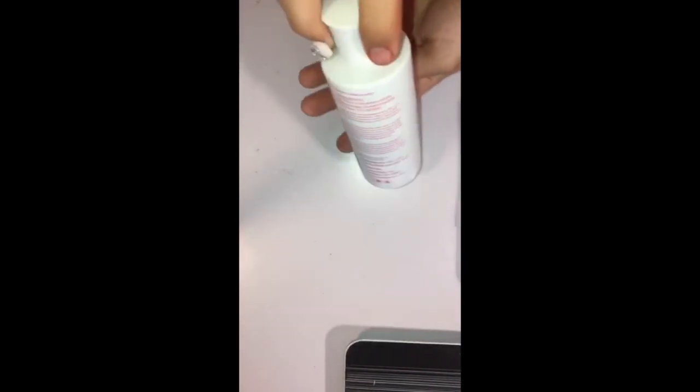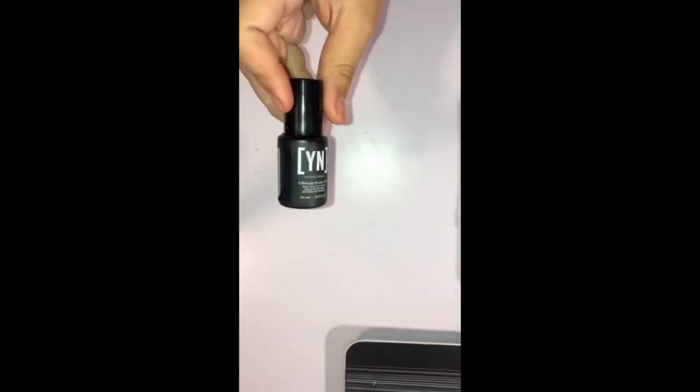For starters, we will be using nail monomer. We will also be using a nail top coat as well as a Kalinske brush.